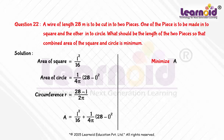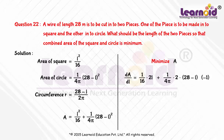To minimize A, we will first find the derivative of A with respect to L. dA/dL is equal to (1/16) times 2L plus (1/4π) times 2 times (28 minus L) times (minus 1), which simplifies to L by 8 minus (28 minus L) by 2π.